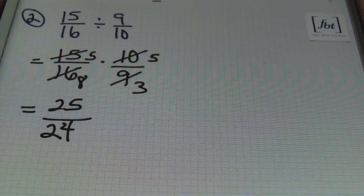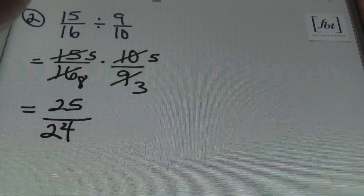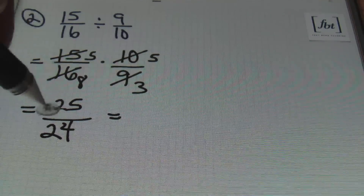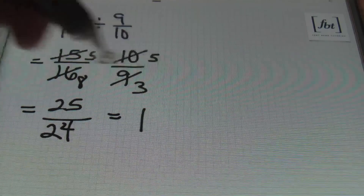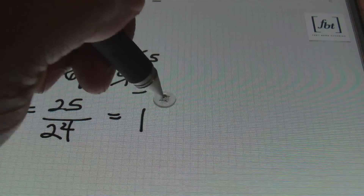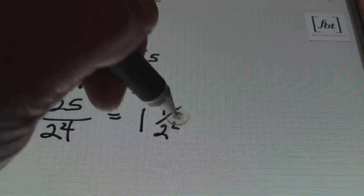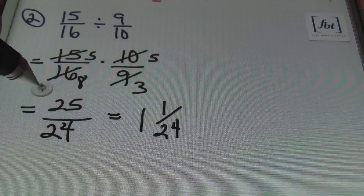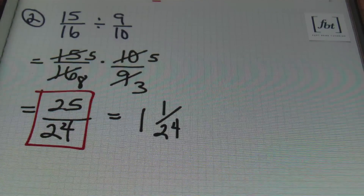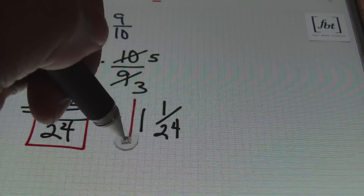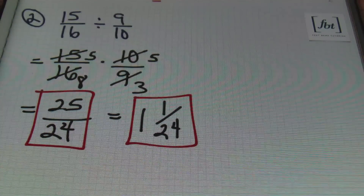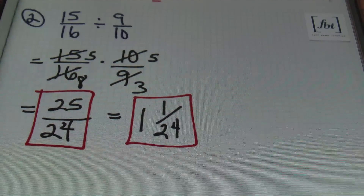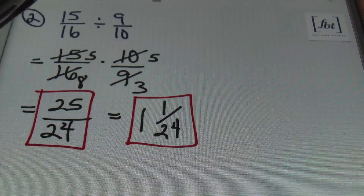And this is our answer right here, ladies and gentlemen. You can leave your answer like this, or if you wanted to write it as a mixed number, 24 goes into 25 one time leaving one over. So that's 1 and 1 twenty-fourths. So depending on what level of class you're in, 25 twenty-fourths is the answer, or you can give your answer as a mixed number and it'll be 1 and 1 twenty-fourths.